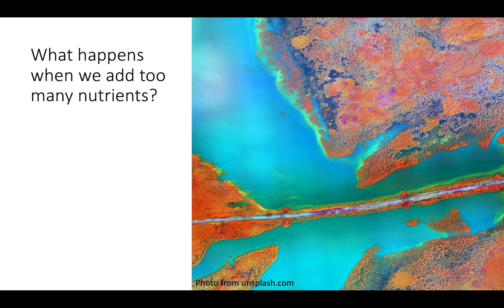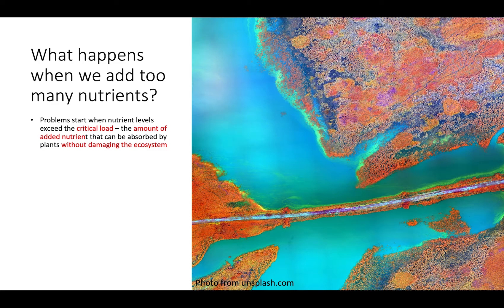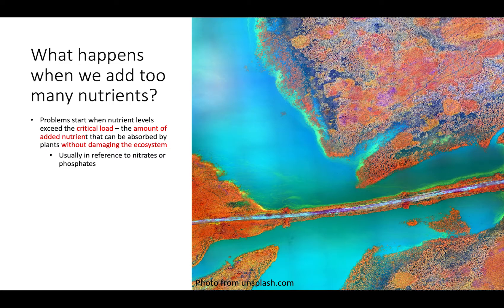So what happens when we add too many nutrients? We start to see problems when we exceed the critical load for a particular nutrient. The critical load is the amount of the added nutrient that can be absorbed by the plants in that environment before we start to see damage to the ecosystem. When talking about critical loads and damage to the ecosystem through nutrient enrichment, that is usually in reference to nitrates or phosphates, which are both really common ingredients in industrial fertilizers.